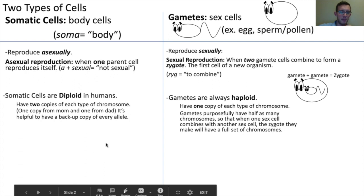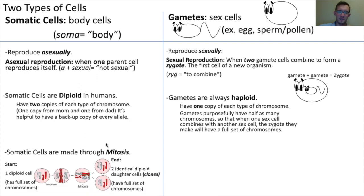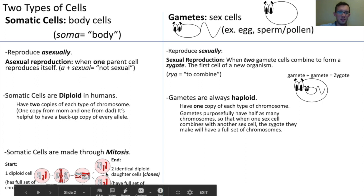Somatic cells are made through mitosis — that is, when a single diploid cell with a full set of chromosomes reproduces its chromosomes and divides them into two separate cells. At the end of mitosis and after cytokinesis occurs, what's left over are two identical clones of the parent cell, each with the same full set of chromosomes that the parent cell started out with.